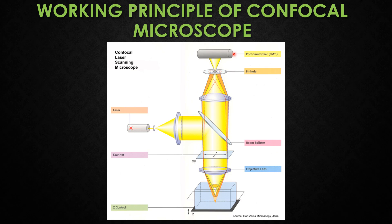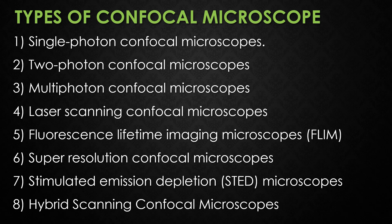The confocal microscope produces very low intensity light, so the light is amplified by a photomultiplier tube, or PMT. These photomultipliers can amplify a faint signal around one million times without introducing noise. After amplification, the photomultiplier tube releases an electric signal which is then converted into an image by a computer.